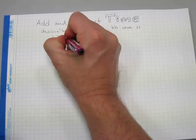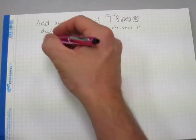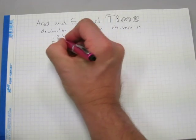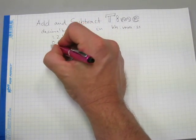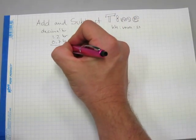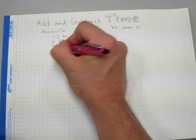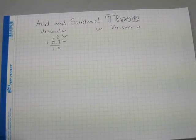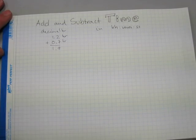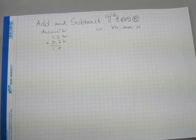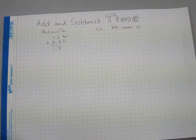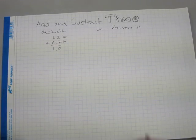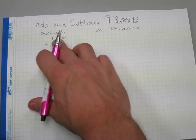If you have time in decimal hour format, it looks like: on one job you spent 1.2 hours, and later on the same job you spent 0.7 hours — you can just add using standard decimal addition and it's done. Conversion from decimal hours is covered in another video. In this video we will do it in hours, minutes, and seconds because it is harder that way.